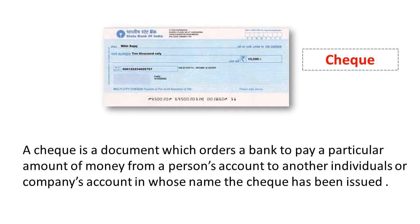This is called a check. A check is a document which orders a bank to pay a particular amount of money from a person's account to another individual's or company's account, in whose name the check has been issued.